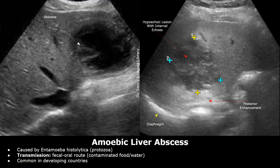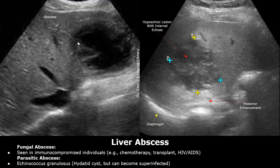Amoebic abscesses are less common. They are caused by a parasite called Entamoeba histolytica. This happens more in developing countries, and it spreads when people drink or eat food contaminated with this parasite. A fungal abscess, which is caused mostly by candida, is rare, but it can occur in immunocompromised people, like those on chemotherapy or with AIDS. A hydatid cyst can also become superinfected and filled with pus.